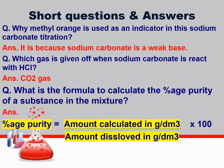Generally we use phenolphthalein as an indicator in acid-base titration. Why is methyl orange used as an indicator in this sodium carbonate titration? Answer: it is because sodium carbonate is a weak base. Which gas is given off when sodium carbonate is reacted with HCl? Whenever a carbonate reacts with an acid, it gives salt, carbon dioxide gas, and water — so carbon dioxide gas is produced.